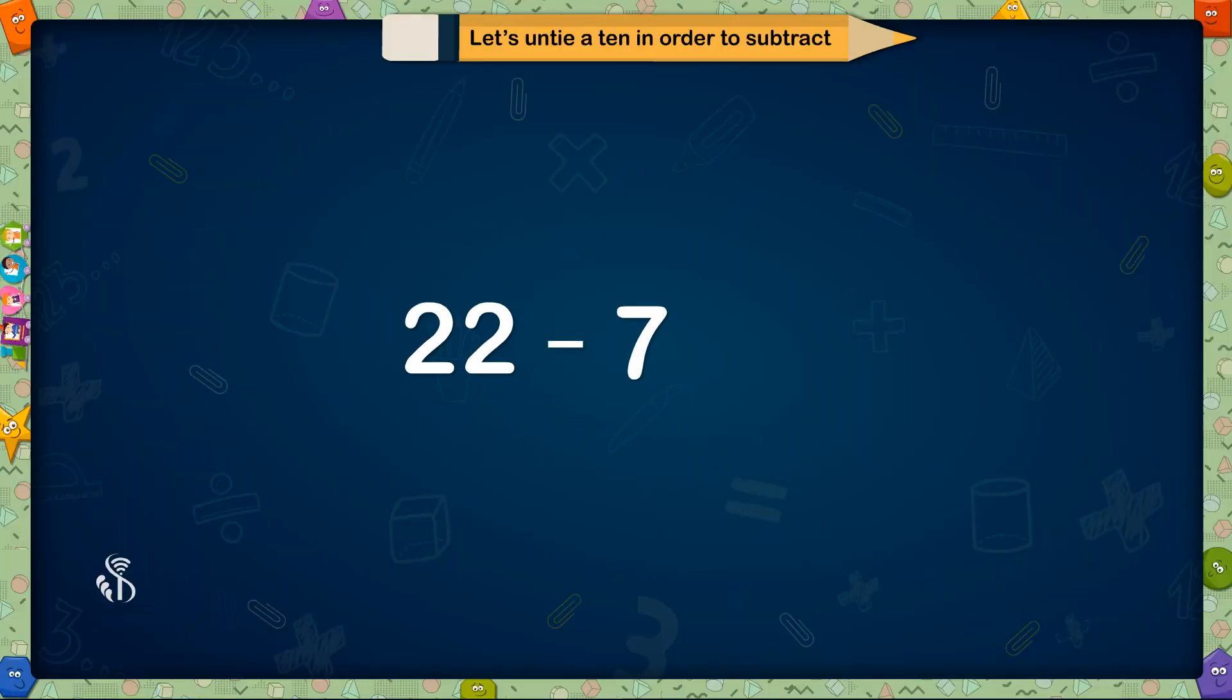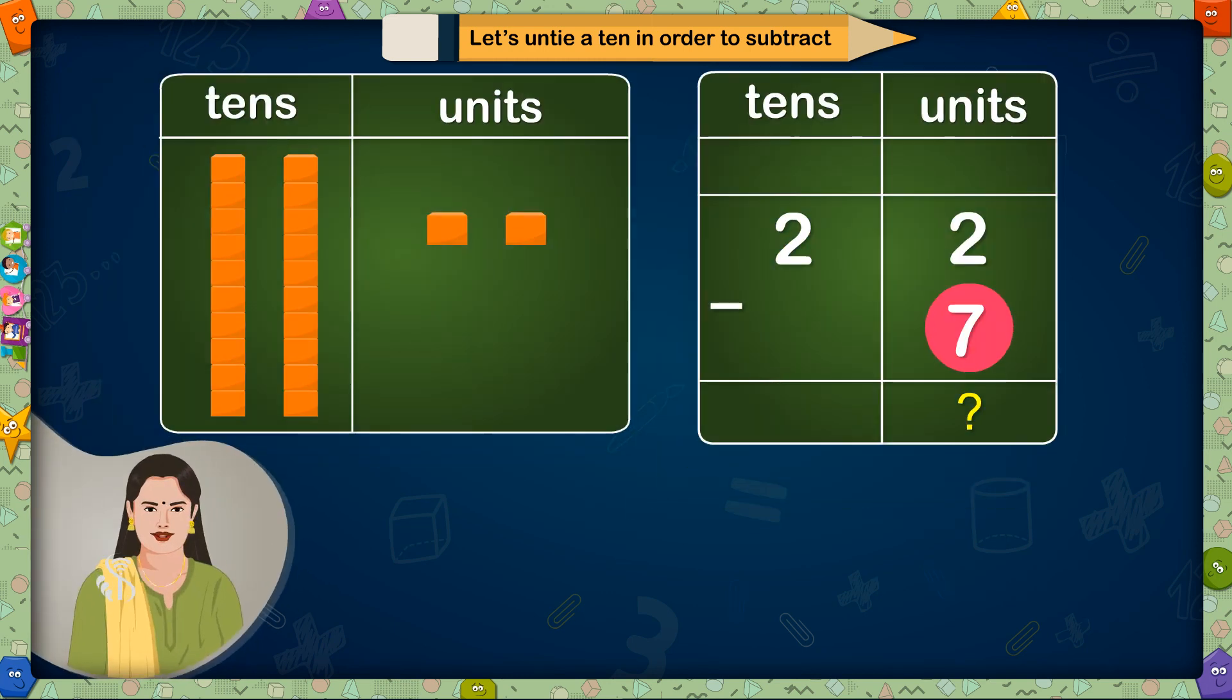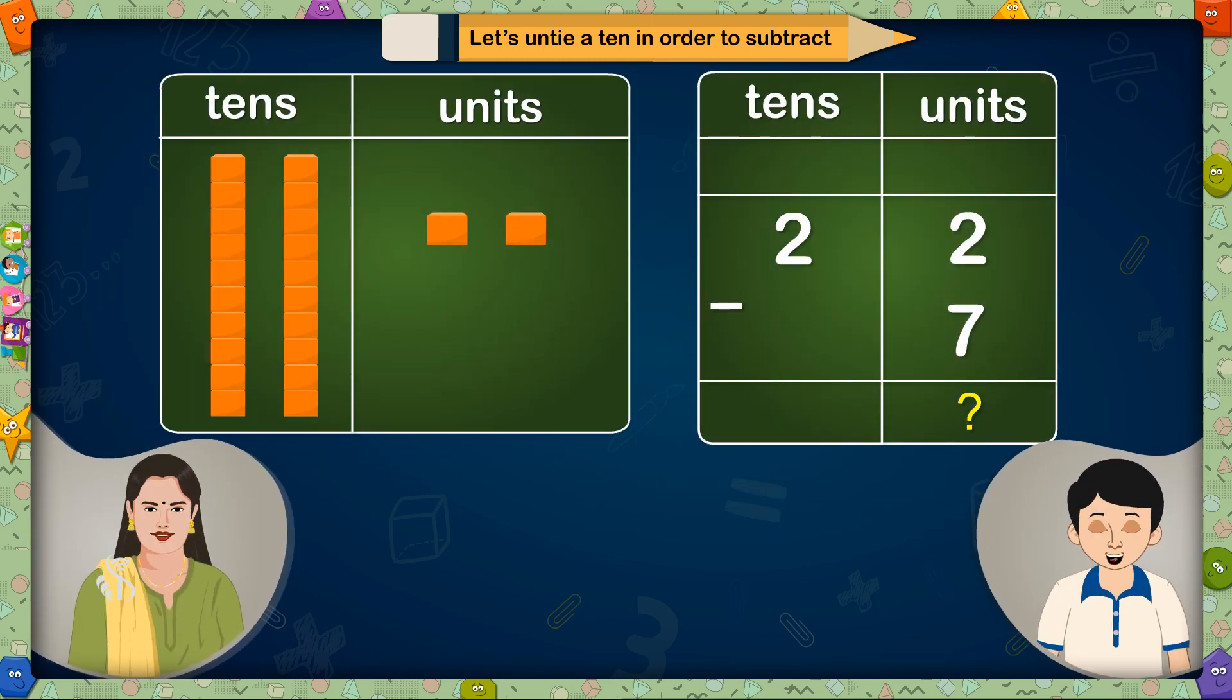Example 1. 22-7 is equal to? Here we have to subtract 7 from 22. There are 2 tens and 2 units in 22. Can we reduce 7 units from 2 units? No madam! Then what do we have to do now?